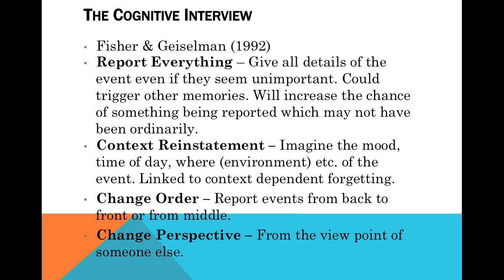And that's true of the last part of the cognitive interview, which is 'change perspective'. This is where you're asked to give the account - give your witness statement from the perspective of someone else. Maybe it was another witness, maybe it was the victim, maybe it was the offender. Maybe if you saw a car crash side on, you're asked to say what you'd have seen if you were behind one of the cars or even hovering above. Again, the idea here is that they're thinking about the information a bit more. So those are the four things of the cognitive interview - report everything, context reinstatement, change order, change perspective.